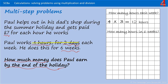Now we need to know how many hours that is in six weeks. So we take those 12 hours and we multiply that by six. And if you know your six times tables, you'll know that that's 72.